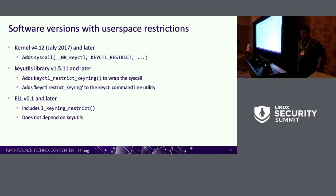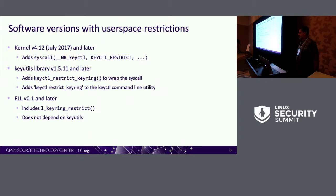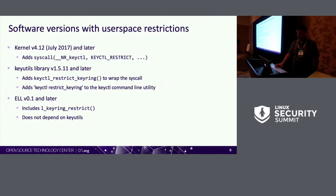I worked on patches to add a keyctl operation that would let you set the restrict function on a key ring from user space. This got merged for version 4.12. There's user space support — the keyctl function isn't part of the C library, it's part of the keyutils library. Version 1.5.11 and later has a wrapper function for that syscall and a command line utility as well. Every tag release of ELL has that function supported too.